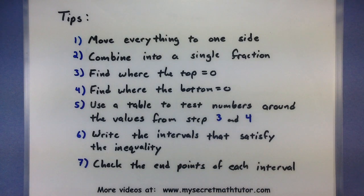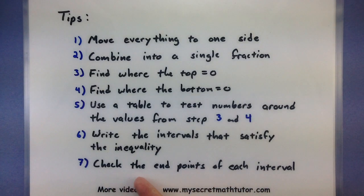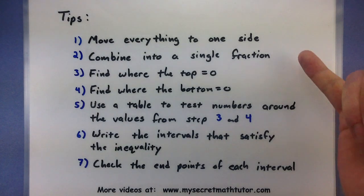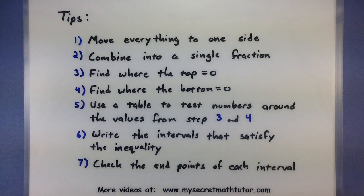If we have something like less than zero, we'll grab the negative intervals. If we have something greater than zero, we'll grab the positive intervals. The very last part is we need to check the endpoints of each of these intervals to see whether they need to be included or possibly not included. We've got a lot of steps, so as I go through both examples, look carefully at how I go through each and every one of these.